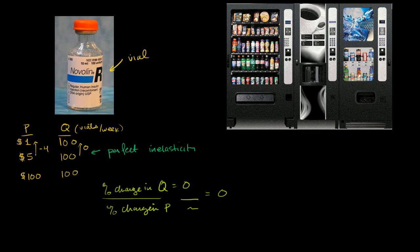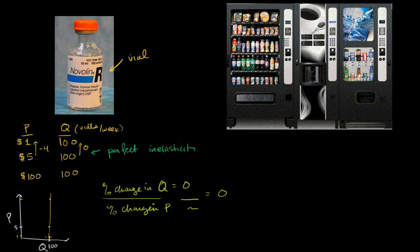And if you wanted to see what this demand curve would look like, let's plot it. This right over here is my price axis, and that is my quantity axis. And so no matter what — let's say this is a quantity of 100 vials per week — that's true when the price is $5, that's true when the price is $1, and that's true if the price is $20 or $100 or whatever. They're going to demand 100 vials a week. And so a perfectly inelastic demand curve would look like this: it is a vertical line. It doesn't matter what price you pick — the quantity demanded is always going to be the exact same thing.